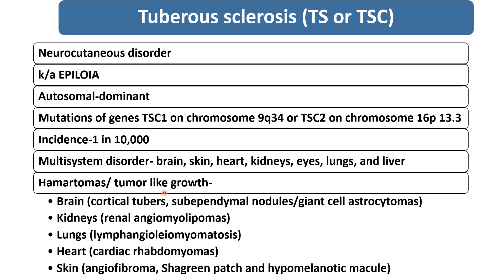Hamartoma or tumor-like growths occur in all these organs. In the brain, examples include cortical tubers, subependymal nodules, or giant cell astrocytoma. In the kidney, renal angiomyolipoma. In the lungs, heart and skin, various hamartomas can also occur. So this is about tuberous sclerosis. Thank you.